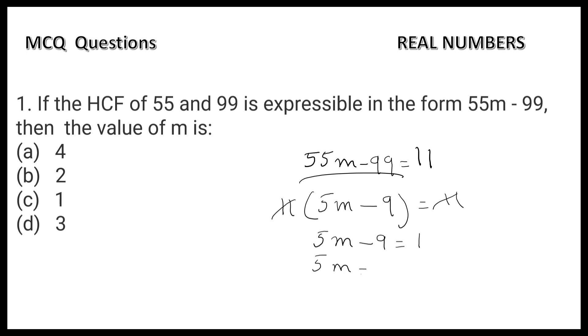Transposing 9 to the right side, 5m = 10. So m = 10/5, that is 2. Option B is correct.